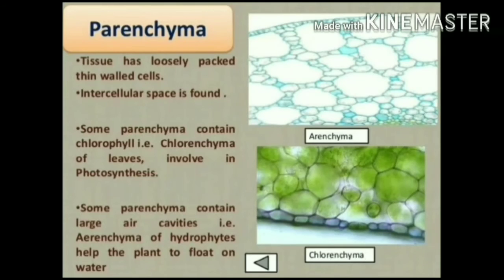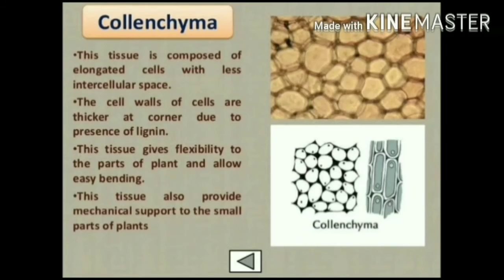The next type of simple permanent tissue is colenchyma. This tissue is composed of elongated cells with less intercellular space. The cell walls are thicker at the corners due to the presence of pectin. These tissues give flexibility to the parts of the plant and allow easy bending. Colenchyma also provides mechanical support to the smaller parts of the plant.